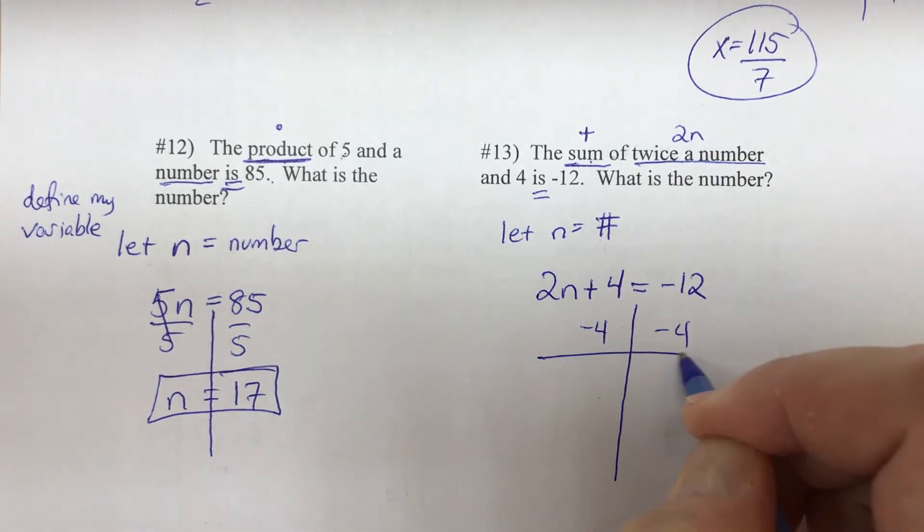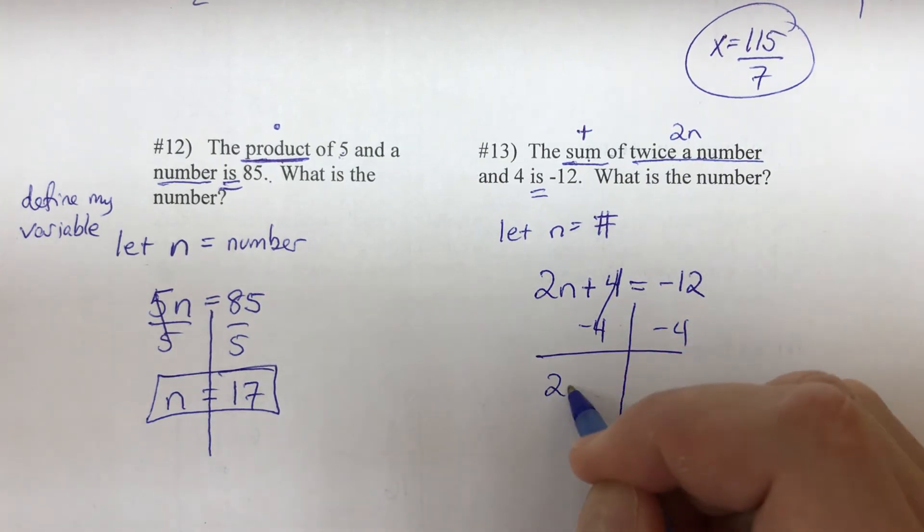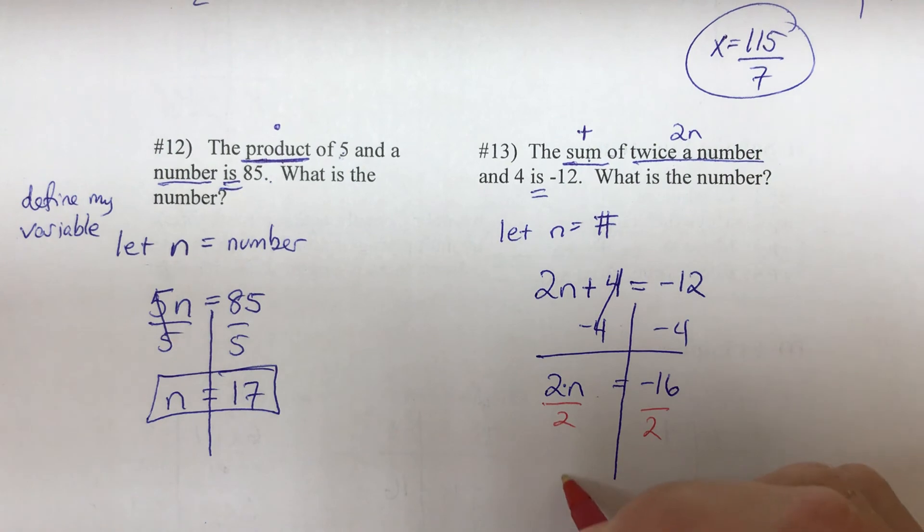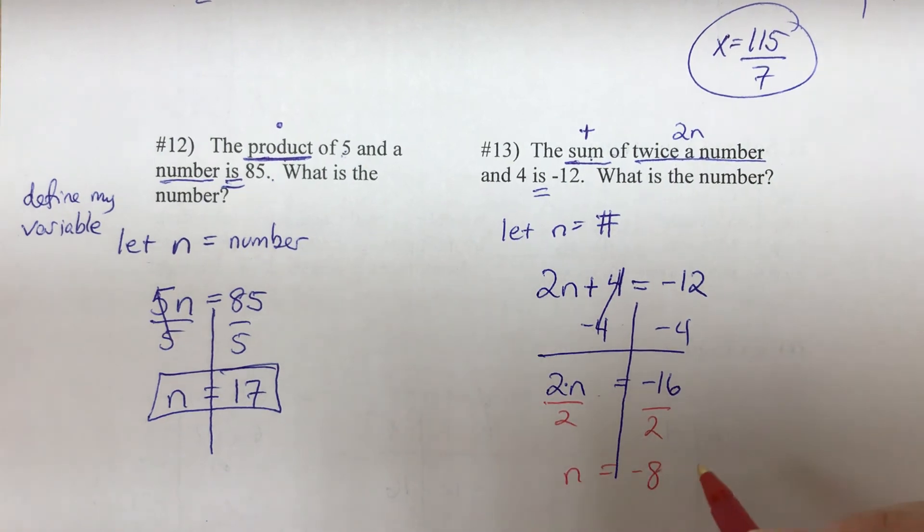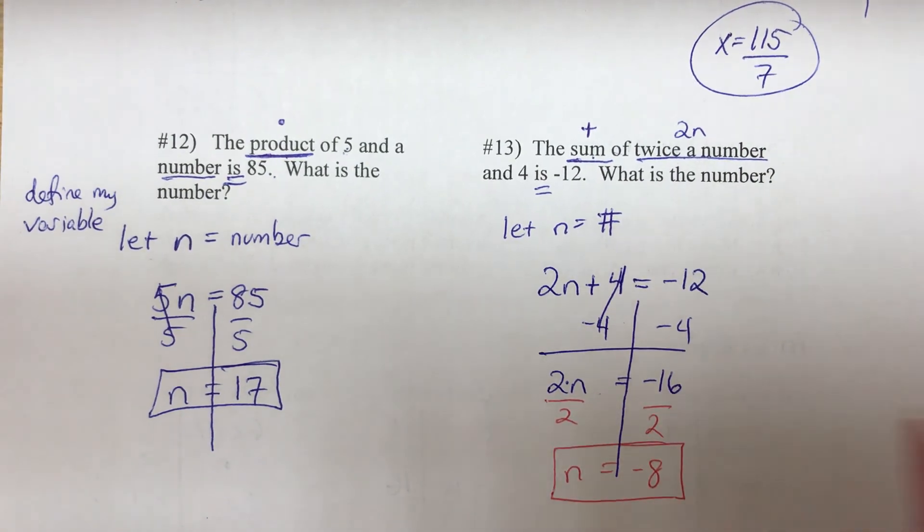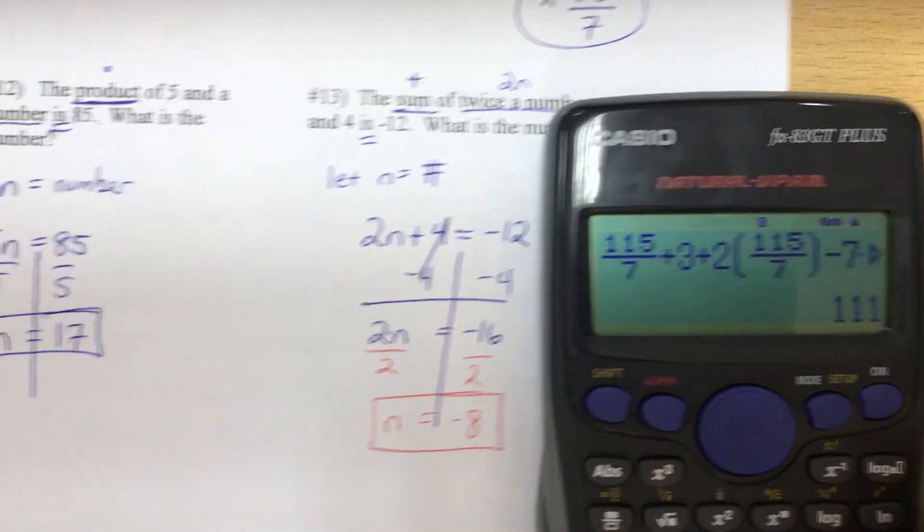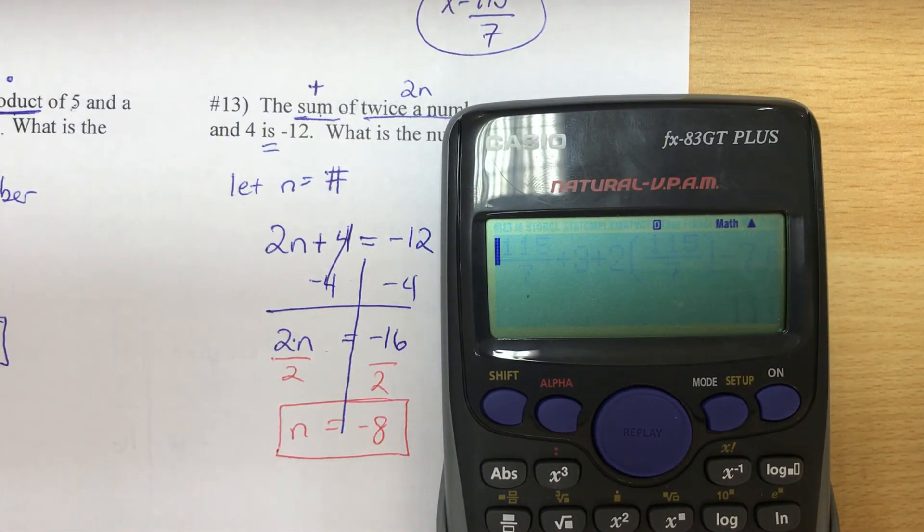So let's move the constant, positive 4, we'll subtract, and we get 2 times n equals negative 16. The last move: this is 2 times n, to undo multiplication let's divide by 2, and we get n equals negative 8. And I think we're good, but let's check. 2 times a number - that was negative 8 - plus 4, is that equal to negative 12? Yes.